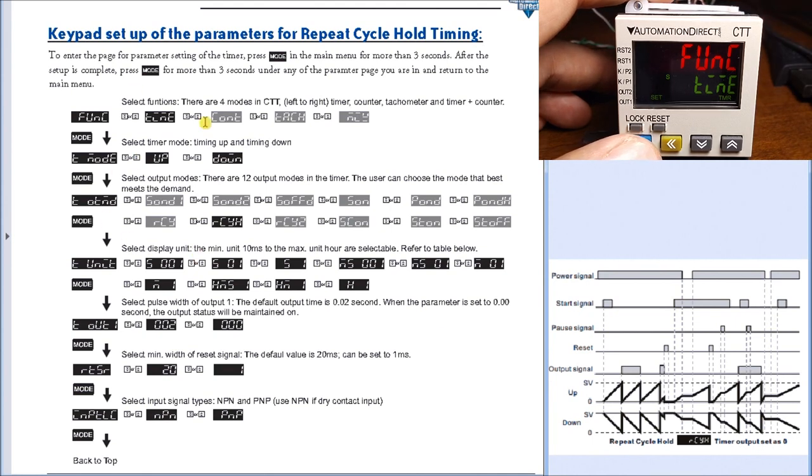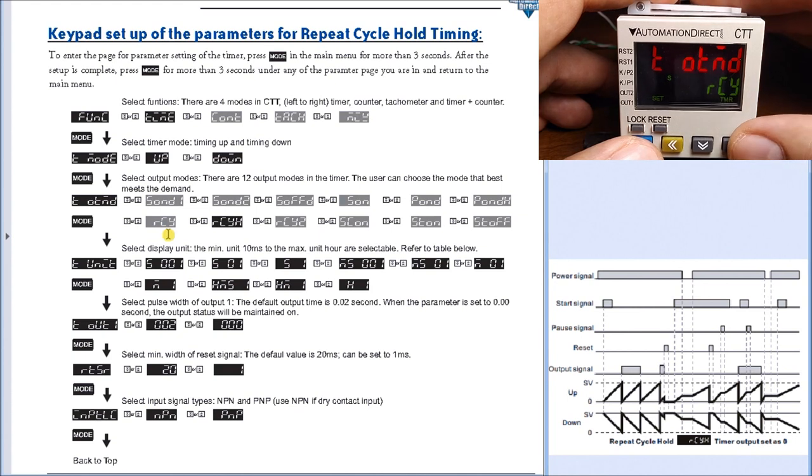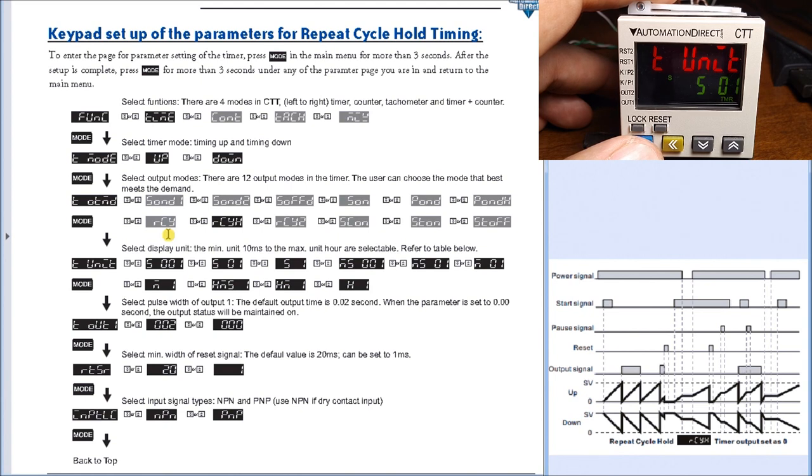We hit it again and have our up mode, so the timer goes up. Next shows our timing mode which is currently repeat cycle, but we want repeat cycle hold. We use the up arrow key to select repeat cycle hold and hit mode key to lock that in.